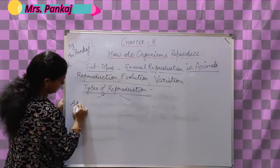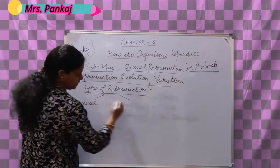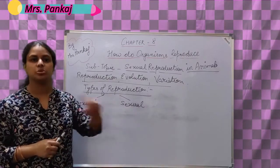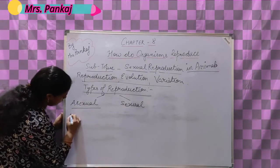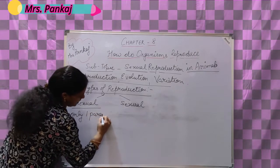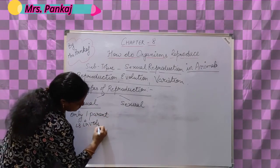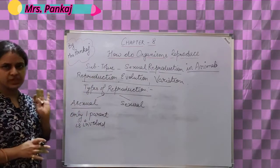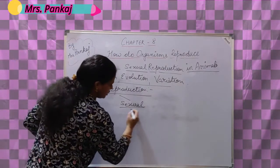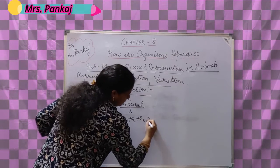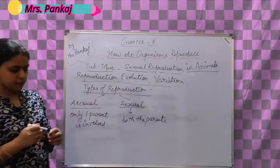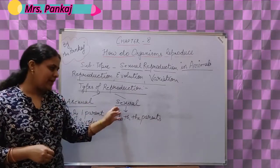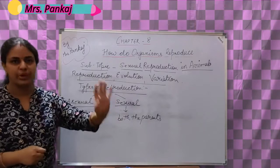Generally we say there are two types of reproduction: one is asexual and the other is sexual. What do you mean by asexual reproduction? When only one parent is involved in this process, the process is known as asexual reproduction - that can be either male or female; only one parent is involved. Sexual reproduction means both the parents are required for this process to occur, or both the parents are involved in this process.